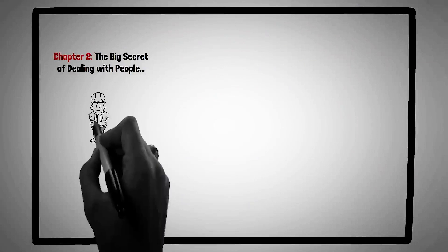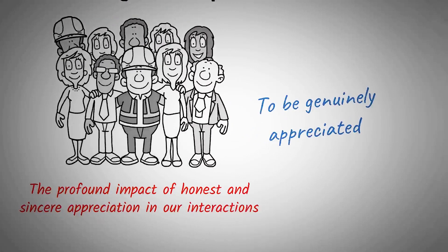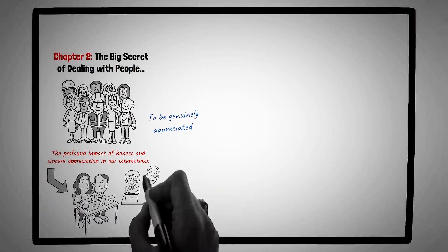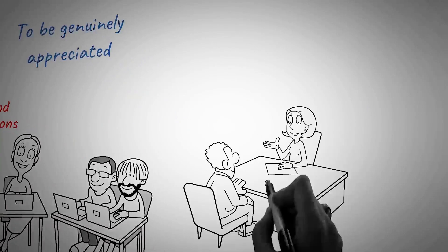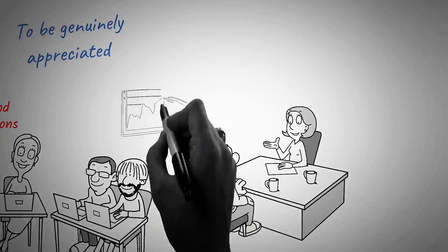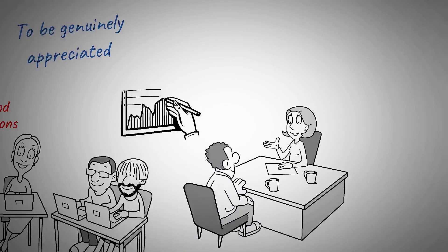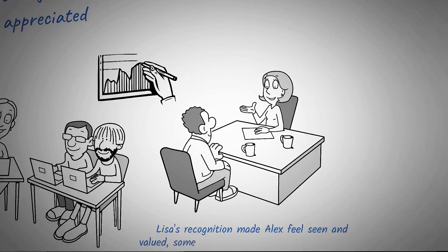Chapter two, the big secret of dealing with people. Every individual, regardless of age, background, or status, shares a universal desire to be genuinely appreciated. In this chapter, the emphasis is on the profound impact of honest and sincere appreciation in our interactions. Meet Alex, a diligent employee who's been with his company for five years. Despite his consistent performance, he often feels overlooked and undervalued. One day, his supervisor Lisa takes note of a particularly challenging project Alex completed and sends a company-wide email acknowledging his hard work and dedication. This simple act of genuine appreciation not only boosts Alex's morale, but also motivates him to continue delivering his best. Lisa's recognition made Alex feel seen and valued, something he had been missing for years.